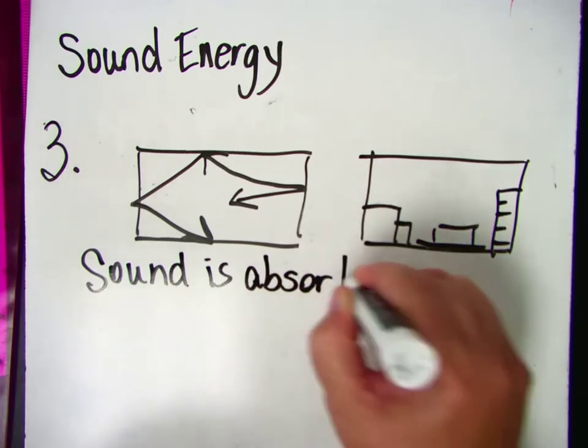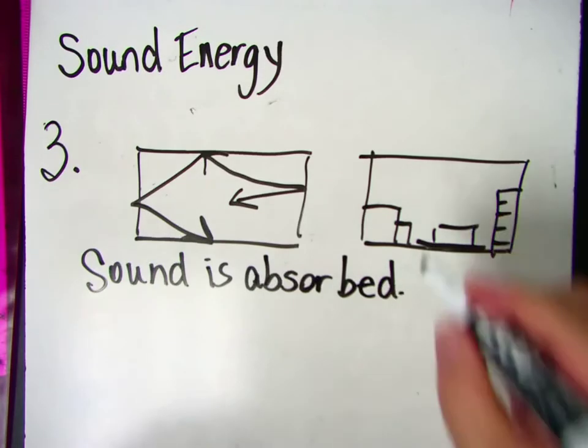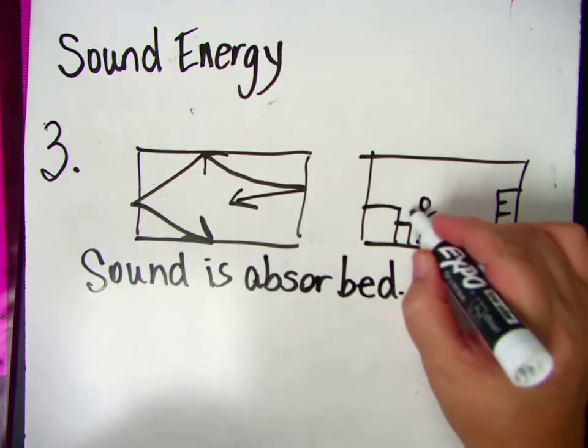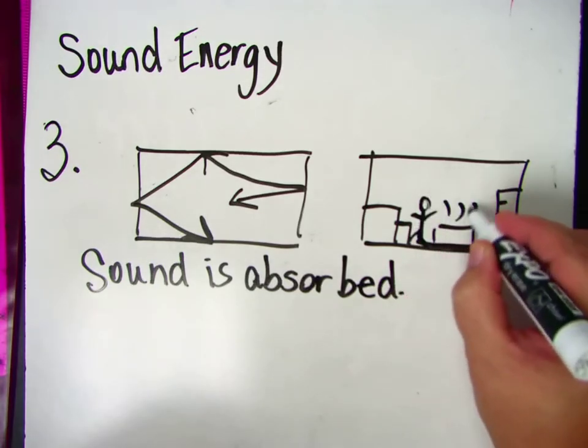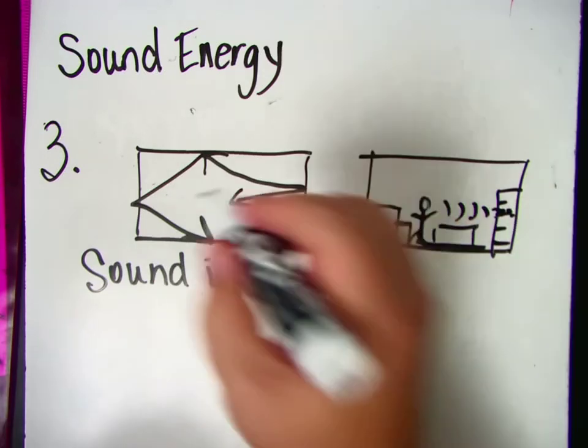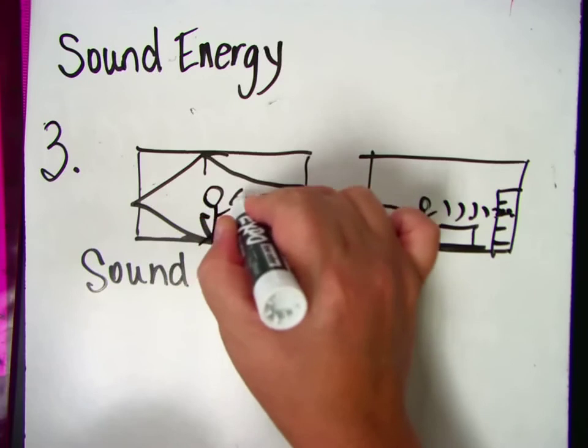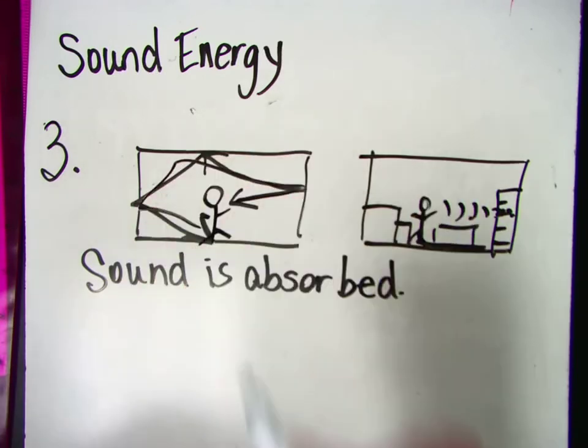That's why it's quieter in a house with furniture than in a house without furniture, because sound is absorbed. So if you're standing in this room and you speak, the sound waves will get absorbed into the bookshelves and the furniture. But if you're standing in this empty room, the sound waves will actually bounce back and forth off of the walls.